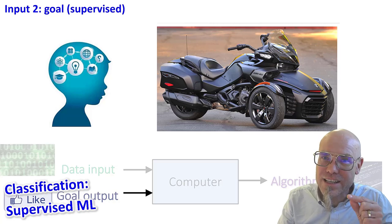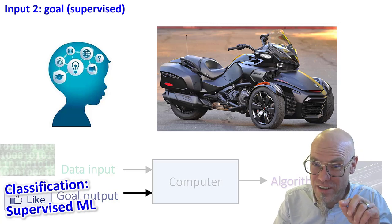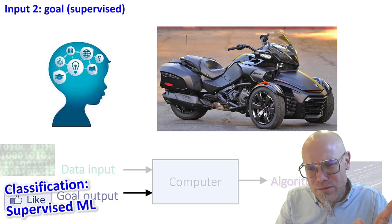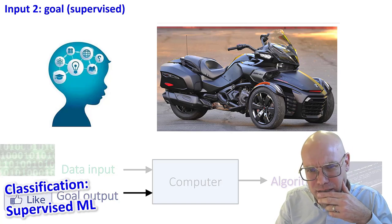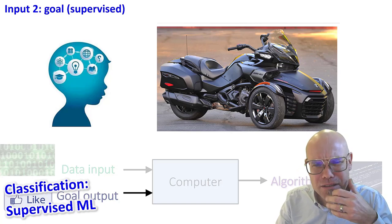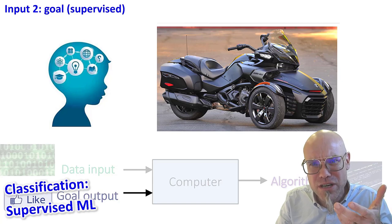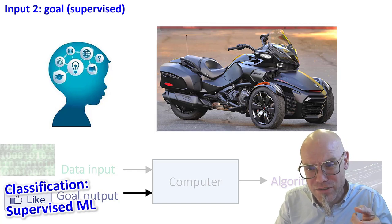and it's supervised learning. So we define what that thing is. And I think most of us would agree on that this is a motorcycle, right? Now, I think we would say that's a motorcycle. So the machine would learn that this is a motorcycle. Now, even so it has three wheels.